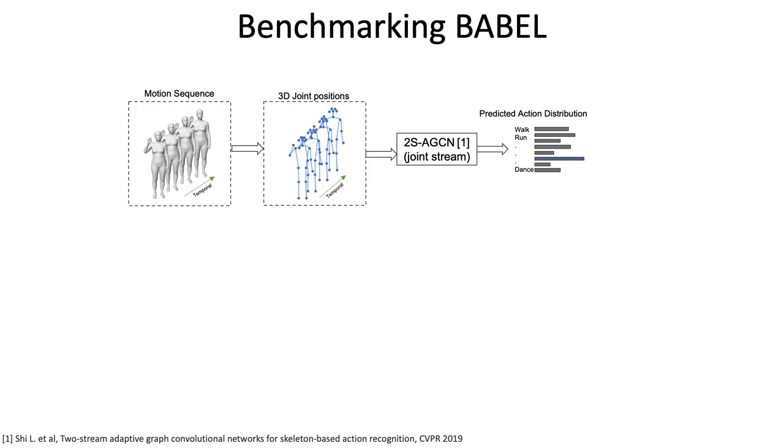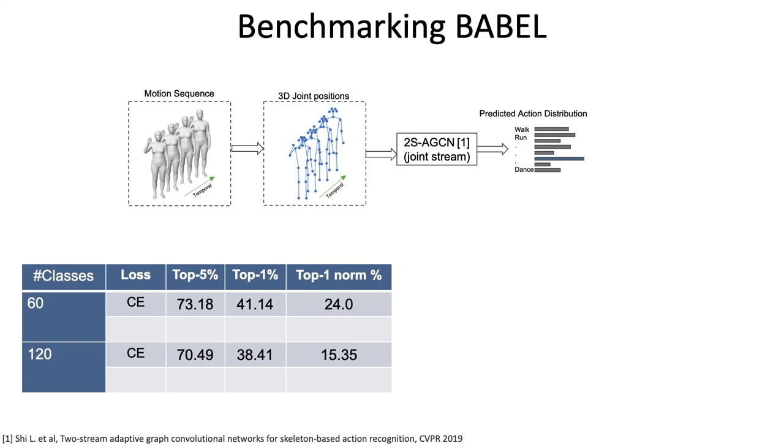Action recognition is an important task that correlates human movement with semantic labels. We benchmark performance of 2s-AGCN, a popular graph convolution-based action recognition model on Babel.